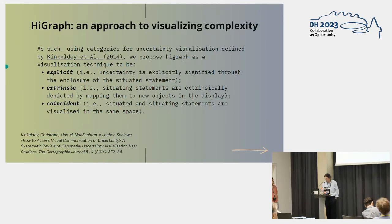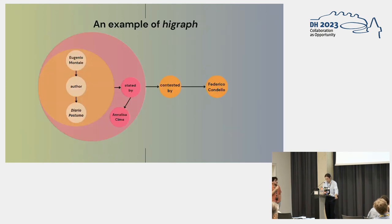In addition, hypergraph as a visualization technique has some interesting properties because first of all, it allows complex statements to be made explicit, which means that uncertainty is explicitly signified through the closure of the quoted statement. Moreover, statements about statements are represented extrinsically and mapped to dedicated visual symbols in the interface. Finally, quoted and quoting statements are visualized in the same space but encapsulated into each other.